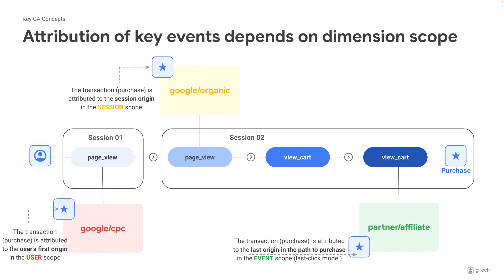To dig a little deeper on what we just talked through, the purchase will actually be attributed to different scopes depending on which reports you are looking at. In this visual, we represent the purchase with a star. For the user scope, the transaction is attributed to the user's first origin, which would be Google CPC in this case. For session scoped reports, the transaction is attributed to the session origin, which is Google organic.